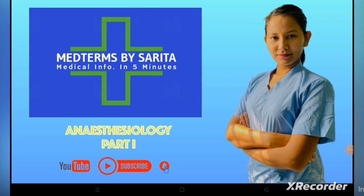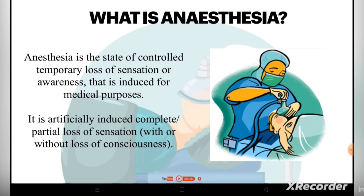Today I will be discussing about Anastasiology part 1. We will start from the simple definition of Anesthesia. Anesthesia is a state of controlled, temporary loss of sensation or awareness that is induced for medical purposes. It is a controlled temporary loss of sensation — when you give anesthesia, you don't know what is happening, and we can reverse it after that. We can use it for various treatment purposes.